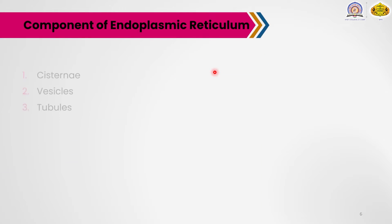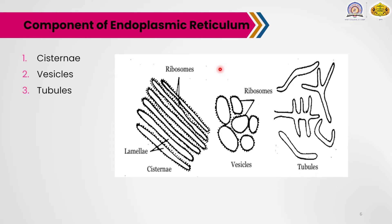Moving to the next point — the components of endoplasmic reticulum. There are three main components: first, cisternae; second, vesicles; and third, tubules. The cisternae are long, flattened, sac-like, unbranched structures with diameters of 40 to 150 nanometers. They remain arranged in a parallel manner in bundles or stacks.